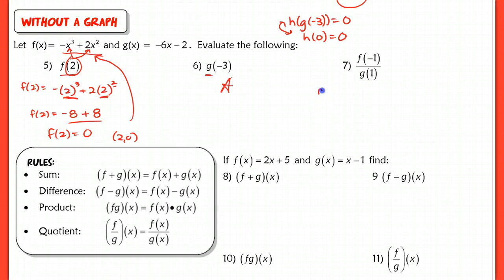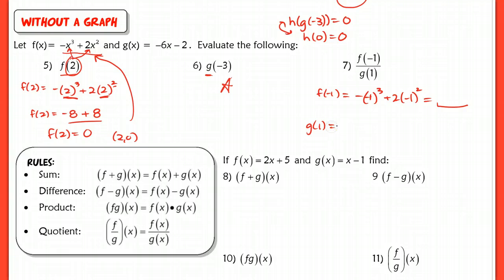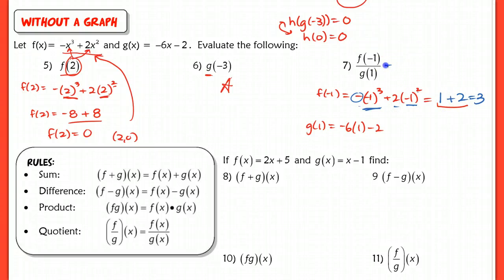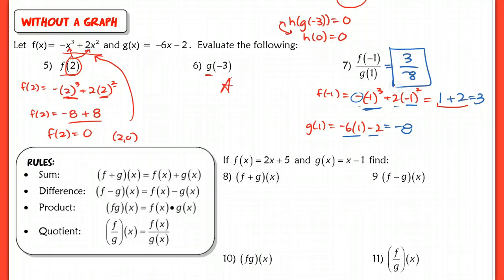For f of negative 1 over g of 1, plug negative 1 into f: I have the opposite of negative 1 cubed plus 2 times negative 1 squared, divided by g of 1, which is negative 6 times 1 minus 2. Negative 1 cubed is negative 1, and with the negative on the outside, this becomes positive 1. Negative 1 squared is positive 1, times 2 is 2. So f of negative 1 equals 1 plus 2 equals 3. And g of 1 is negative 6 minus 2, which is negative 8. So f of negative 1 over g of 1 is negative three eighths.